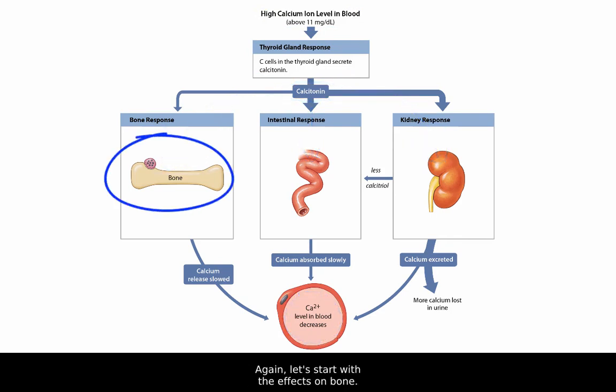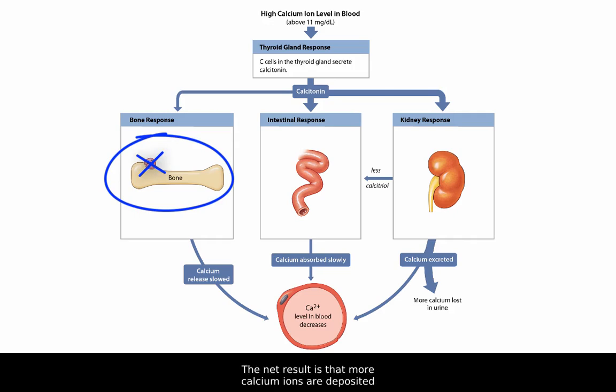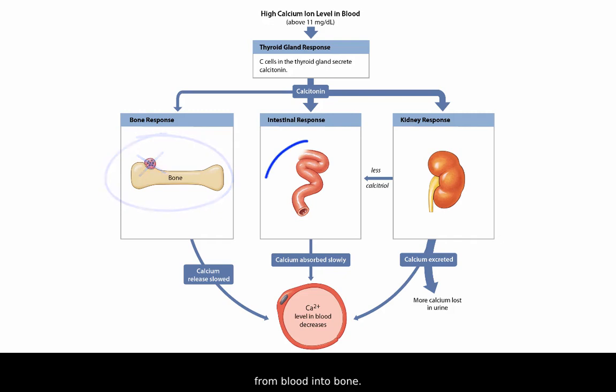Let's start with the effects on bone. Calcitonin inhibits osteoclasts, but does not affect osteoblasts. The net result is that more calcium ions are deposited from blood into bone.